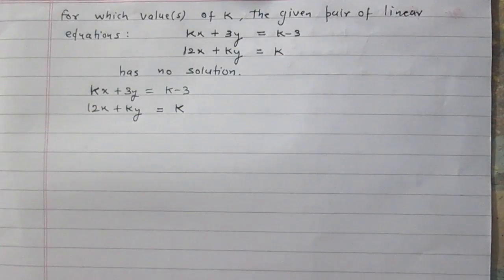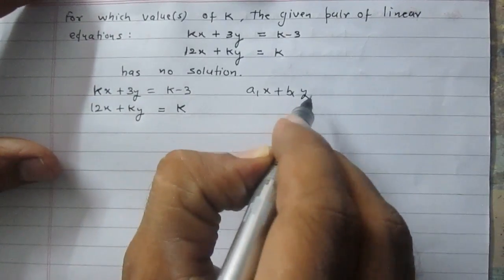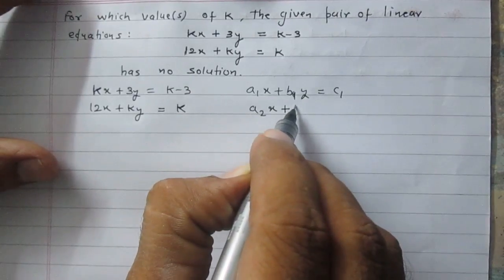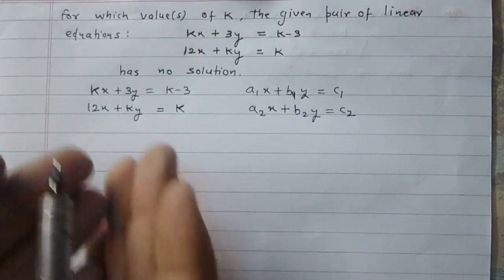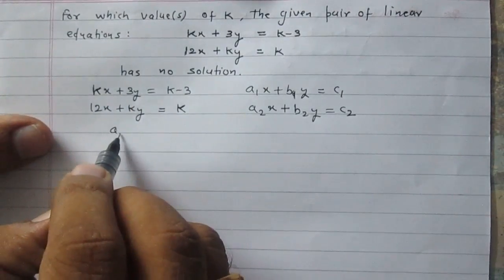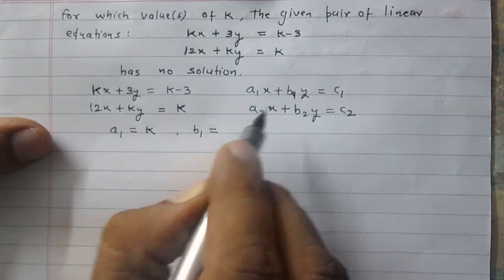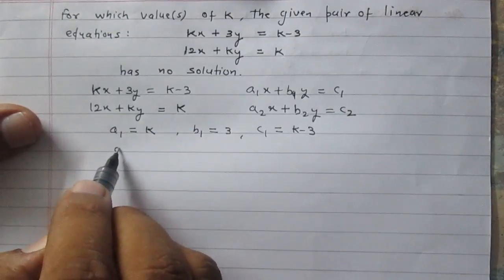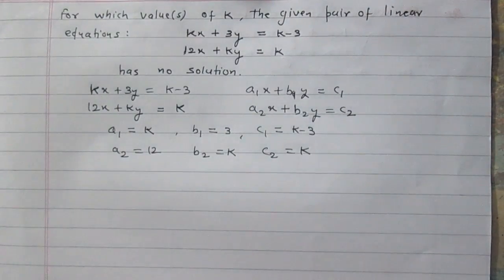Let us compare this pair of linear equations with the general form. The general form has two equations: a1x + b1y = c1 and a2x + b2y = c2. On comparing, we find that a1 = k, b1 = 3, c1 = k - 3, a2 = 12, b2 = k, and c2 = k.